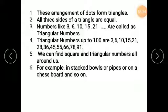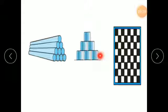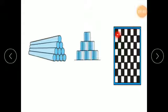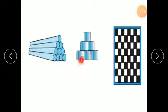We can find square and triangular numbers all around us. For example, in stacked bowls or pipes or on a chess board. If cups are stacked, they form a triangular shape. On a chess board, 8 horizontally and 8 vertically — so 8 eights are 64 squares on a chess board. So real-life objects form both triangular numbers and square numbers.